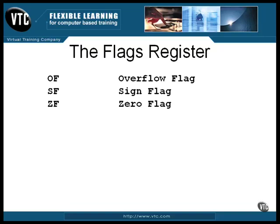The zero flag is another one you use a lot. It gets set when the result of an operation is zero. To compare two numbers for being equal, you subtract them and check this flag. If the result isn't zero, meaning the two are not equal, this flag is cleared.